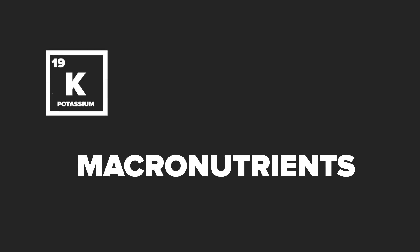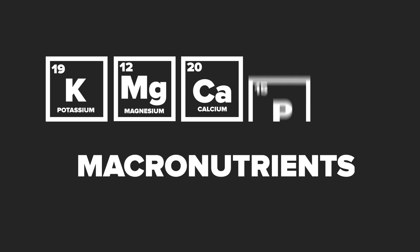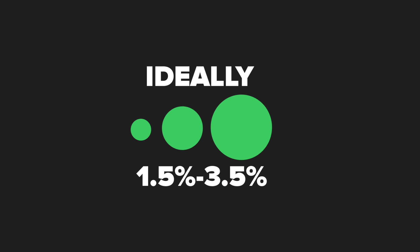Another reason to soil test is to learn the levels of macronutrients available in the soil — things like potassium, magnesium, calcium, phosphorus, and nitrogen. Soil tests give you a good sense of those first four, but nitrogen changes a lot in the soil. So a good soil test will give you the percent organic matter instead, because organic matter gets broken down by microbes and releases nitrogen in forms the plant can take up.